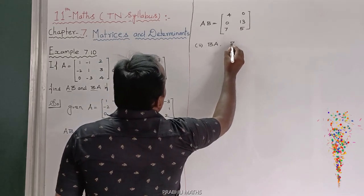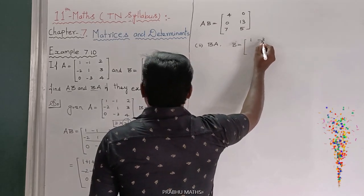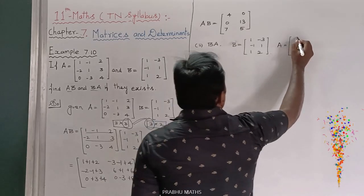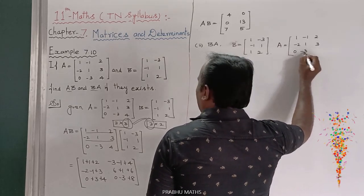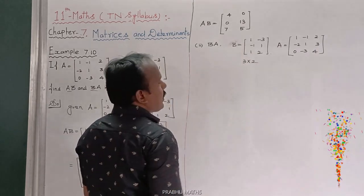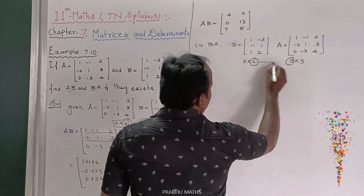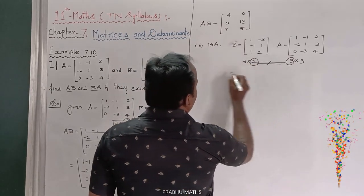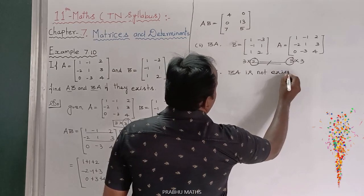Next, to find the value of B times A: B is equal to 1, minus 3; minus 1, 1; 1, 2 — order 3 by 2. A is equal to 1, minus 1, 2; minus 2, 1, 3; 0, minus 3, 4 — order 3 by 3. The first matrix column is 2 and the second matrix row is 3 — these are not equal, so therefore B times A does not exist.